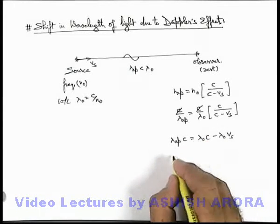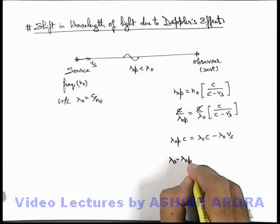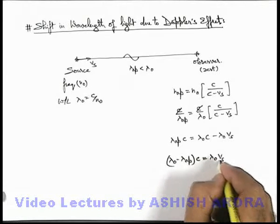And further on simplifying we'll see this will give us lambda knot minus lambda apparent into c is equal to lambda knot v s.